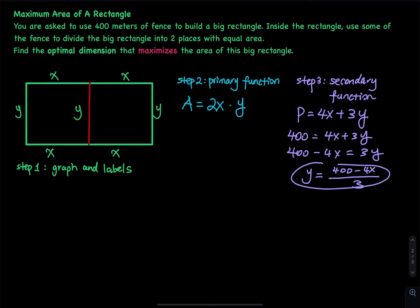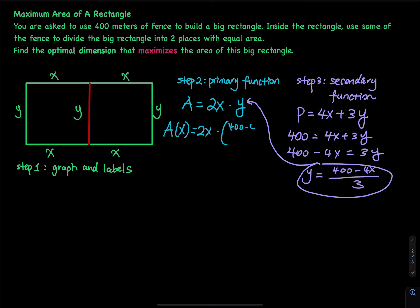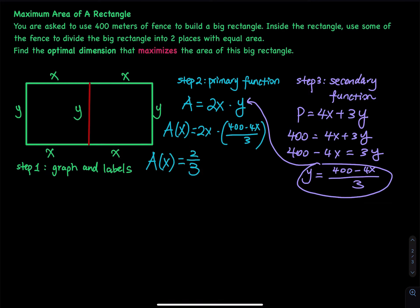We will plug this y into the primary. So now the primary is A of x, which equals 2x times (400 minus 4x) divided by 3. I would like to keep the fraction outside, so A of x equals two-thirds times (400x minus 4x squared). So that is your primary function.